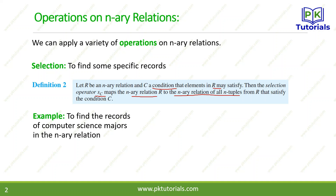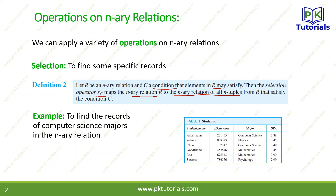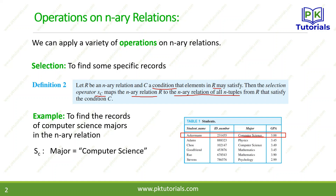For example, to find the record of computer science majors in the N-ary relation — just like the example we did in the last lecture — we had a student database table with four tuples: student name, ID number, major, and GPA. The selection condition C is: major is equal to computer science. So we select the first row whose major is computer science, then the second row whose major is computer science. These two records are retrieved. This is called selection.